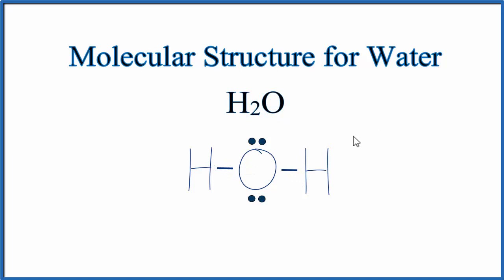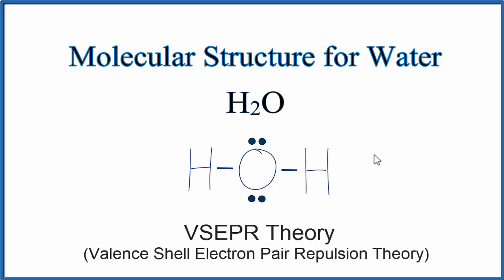So we're getting closer. We now know about these electrons, chemical bonds. The problem is we don't know the three-dimensional structure yet. For that, we're going to use something called valence shell electron pair repulsion theory.